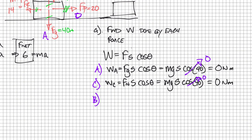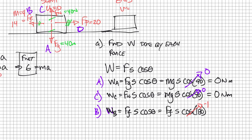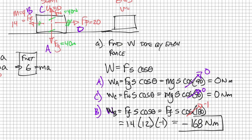Looking at the work done by friction: work equals force of friction times S times cosine theta. The angle is 180 degrees because friction opposes the direction of motion, and cosine of 180 is negative one. Plugging in the numbers: 14 times 12 times negative one gives negative 168 newton meters done by friction.